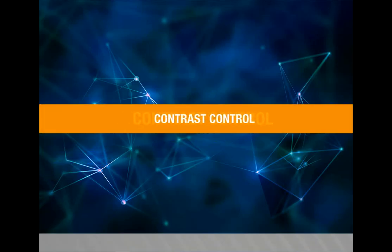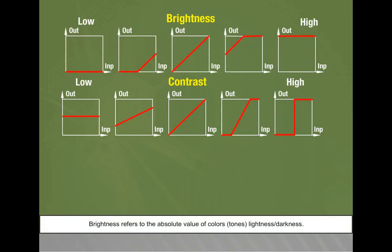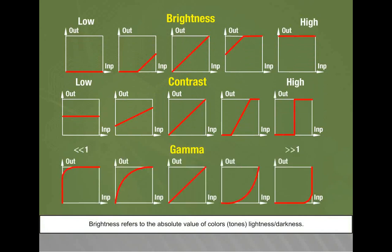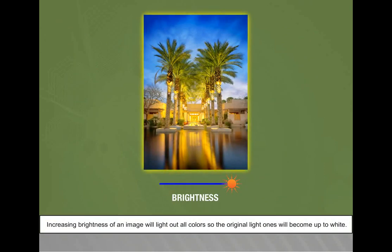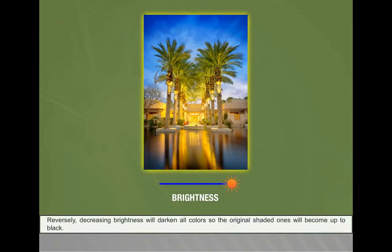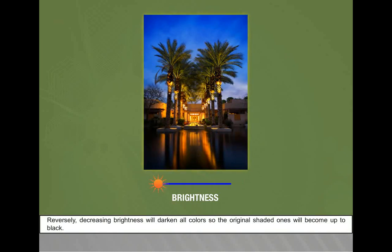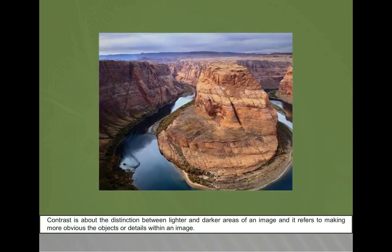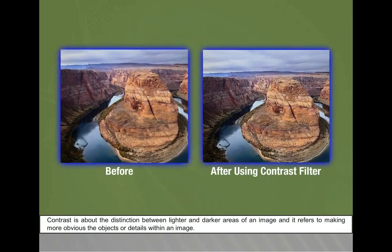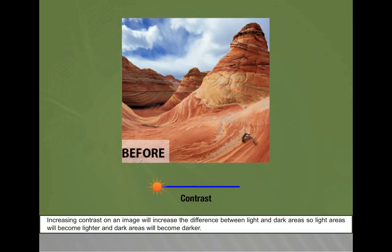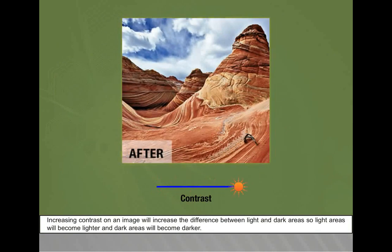Contrast control. Brightness refers to the absolute value of colors — that is, lightness or darkness. Increasing brightness of an image will lighten all colors so that the original light ones will become up to white. Decreasing brightness will darken all colors so that the original shaded ones will become up to black. Contrast is about the distinction between lighter and darker areas of an image — it refers to making more obvious the objects or details within an image. Increasing contrast on an image will increase the difference between light and dark areas so light areas will become lighter and dark areas will become darker.